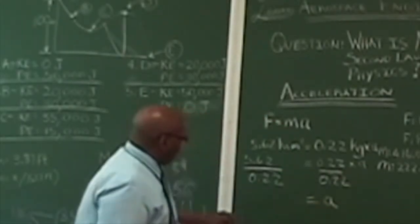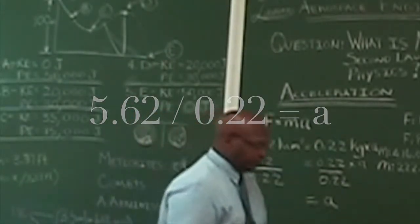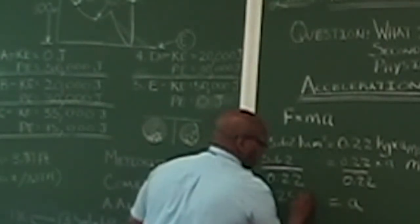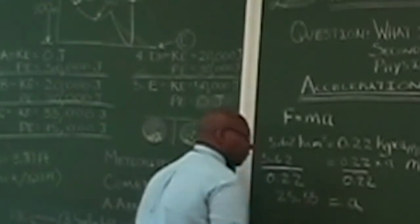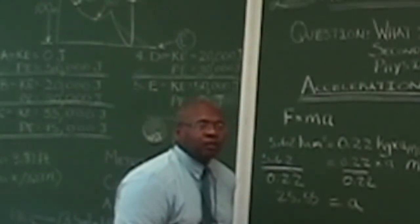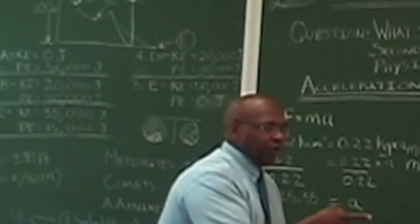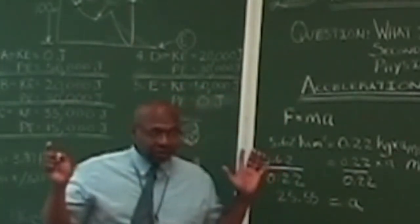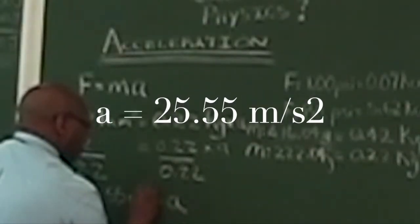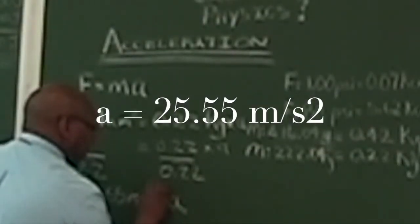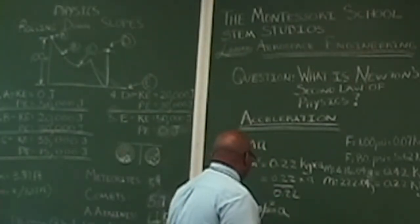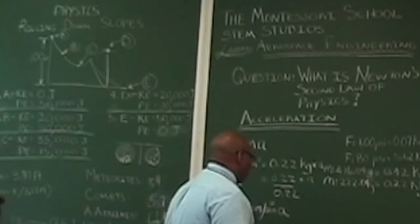Find out the acceleration by dividing 5.62 by 0.22. That gives us 25.55. In acceleration, what unit of measurement do we use? Meters per second squared. This rocket is going to be accelerating at 25.55 meters per second squared.